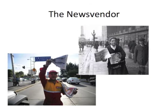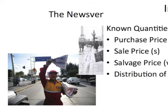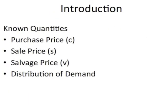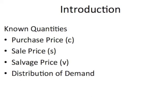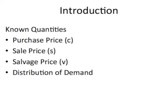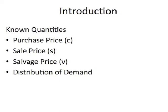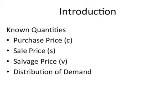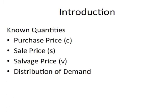Now we'll look at a few inputs for the news vendor problem. In the news vendor problem, we are given the following information: the purchase cost per item, or C; the selling price per item, or S; the salvage value of each item not sold, B; and the distribution of demand.